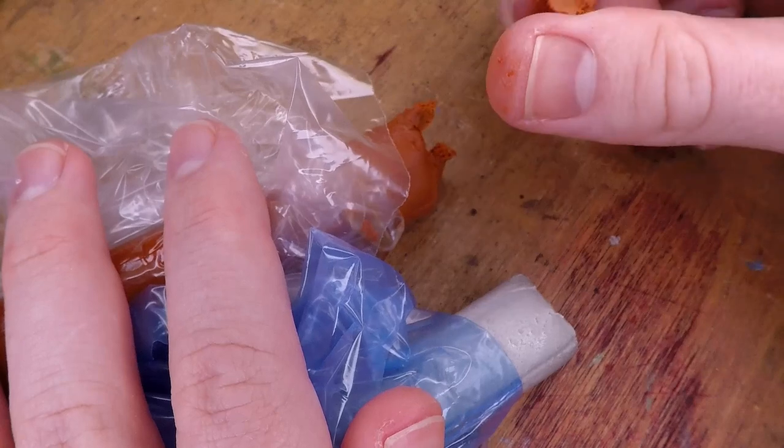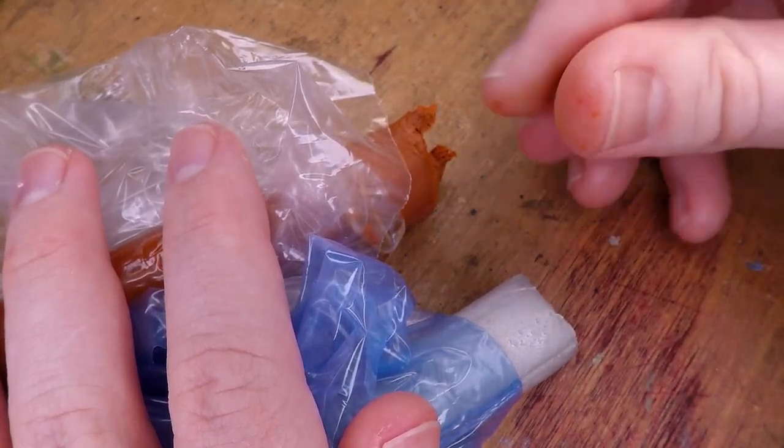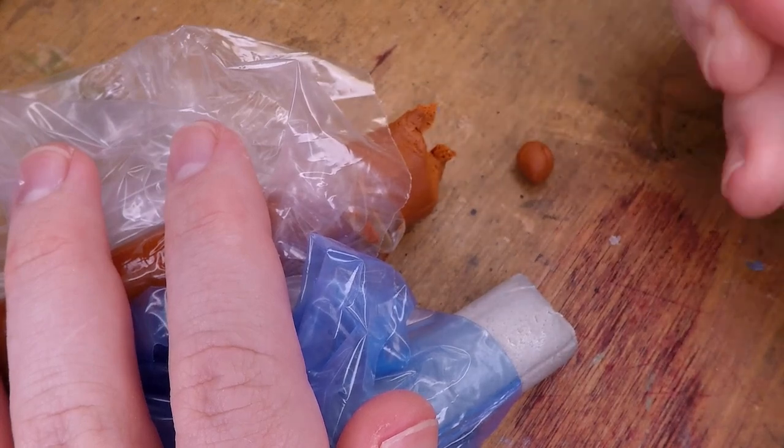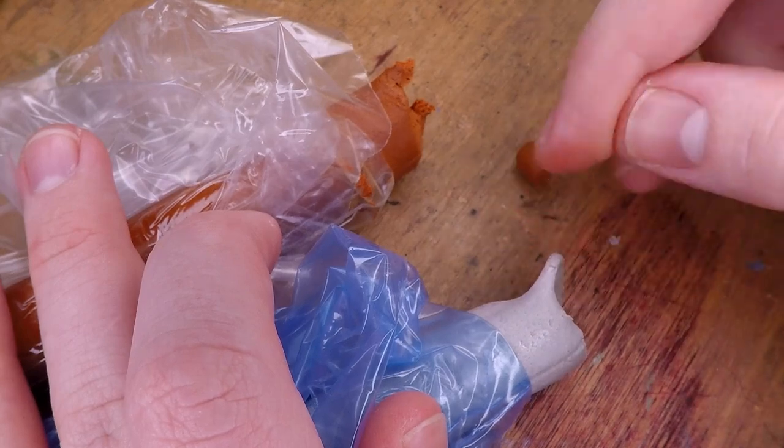As you can see here I've got both parts of the epoxy putty and the top one seems to be the stickier wetter part whereas the gray part seems to be a lot stiffer which you can see just as I'm pulling it off of the main stick.